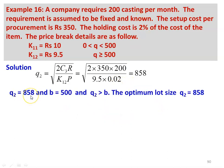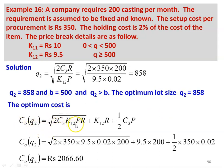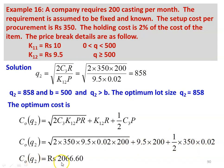Since Q2 (858) is greater than B (500), the optimum lot size equals Q2 = 858. The optimum cost C0(Q2) = √(2C3K12PR) + K12×R + (1/2)×C3×P. Substituting: C0(Q2) = √(2×350×9.5×0.02×200) + 9.5×200 + (1/2)×350×0.02 = ₹2066.60. So the optimum quantity Q2 = 858 and the optimum cost is ₹2066.60.